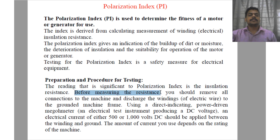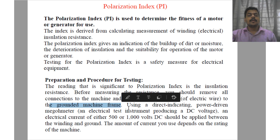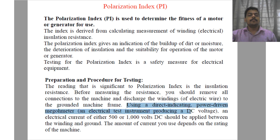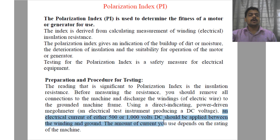Before measuring the resistance, you should remove all connections of the machine and discharge the windings to the grounded machine frame. This is done by using a direct-indicating, power-driven mega-ohm meter, which is an electrical test instrument producing a DC voltage. An electrical current of either 500 or 1000 volts DC should be applied between the winding and the ground.